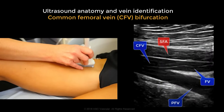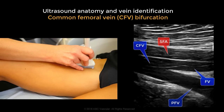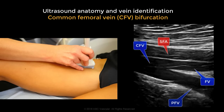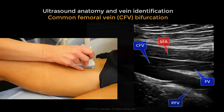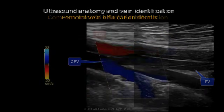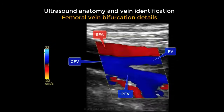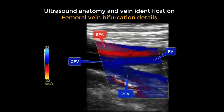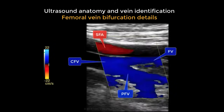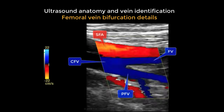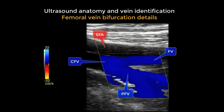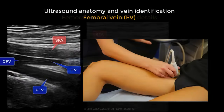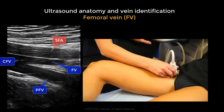You can see that the arterial bifurcation has already divided, and the common femoral vein is just posterior to the superficial femoral artery. You can probably better appreciate this using colour flow. Note that the venous femoral bifurcation is more distal compared to the arterial bifurcation.